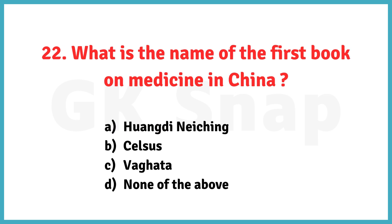What is the name of the first book on medicine in China? The correct answer is option A: Huangdi Neijing.